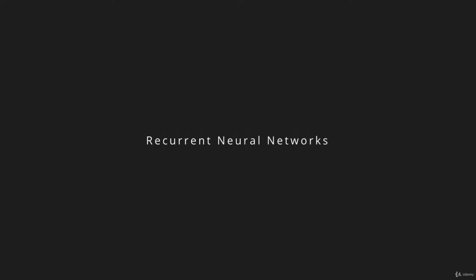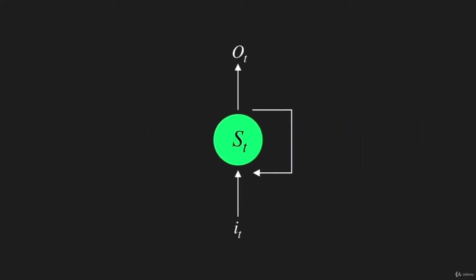RNNs attempt to capture information from previous inputs by maintaining internal memory elements. We have our input, our output, and in our hidden layer we have our state, which is another term for internal memory. Each of these connections has a weight. WI represents the weight matrix connecting the inputs to the state. WO represents the weight matrix between the state and the output. And WS corresponds to the weight matrix connecting the state of the previous time step to the state of the next time step.